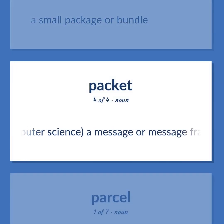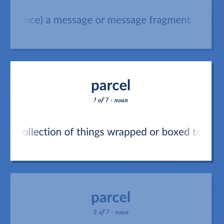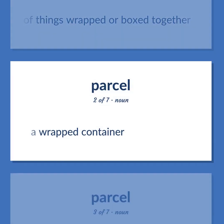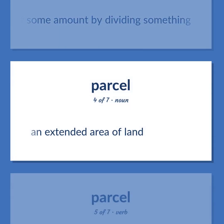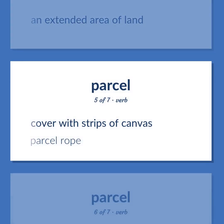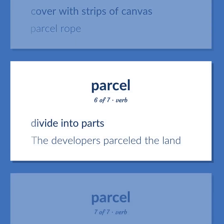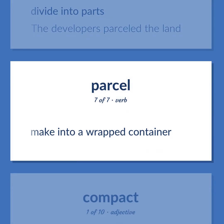Packet — computer science: a message or message fragment. A collection of things wrapped or boxed together. A wrapped container. The allotment of some amount by dividing something. Parcel: an extended area of land. Cover with strips of canvas. Parcel rope. Divide into parts. Example: The developers parceled the land. Make into a wrapped container.